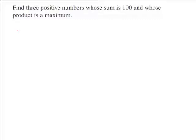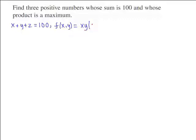Find three positive numbers whose sum is 100 and whose product is a maximum. So the three numbers x plus y plus z must add up to be equal to 100. And we want to maximize the function f, which will be equal to the product x times y times z, which we can rewrite as x times y times (100 minus x minus y).